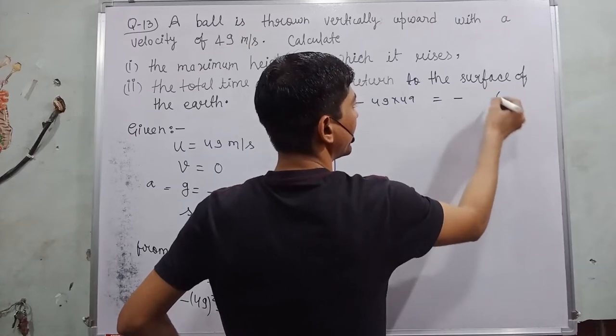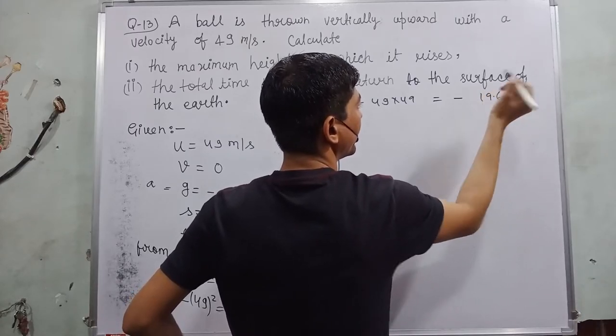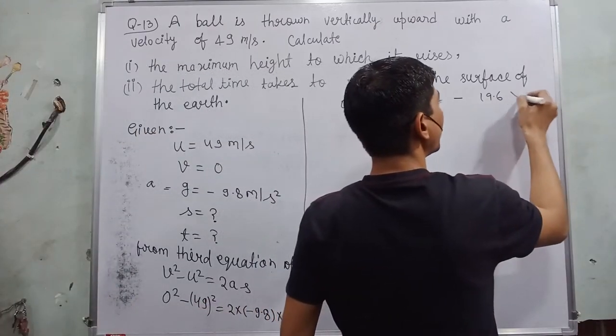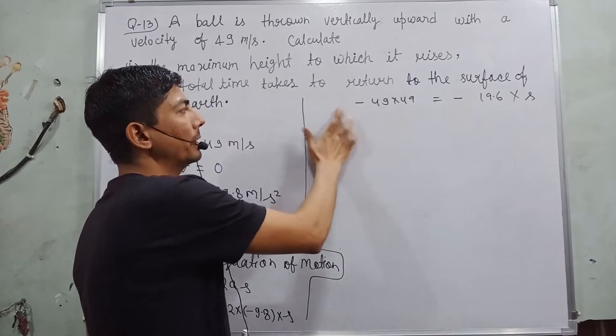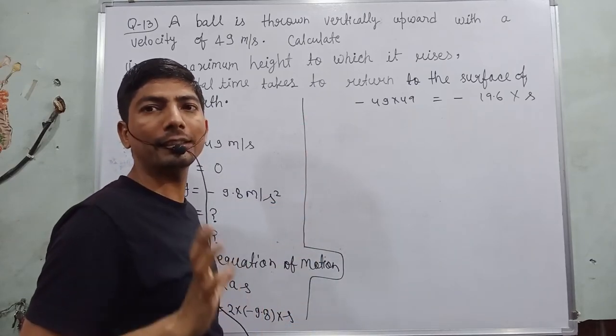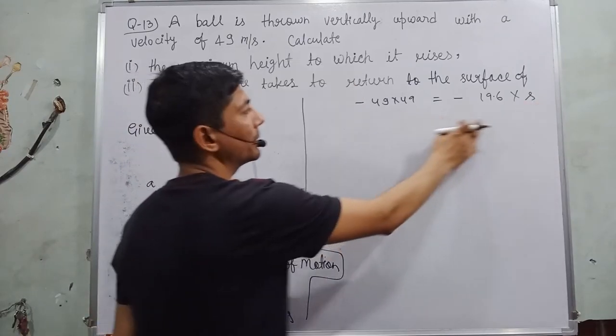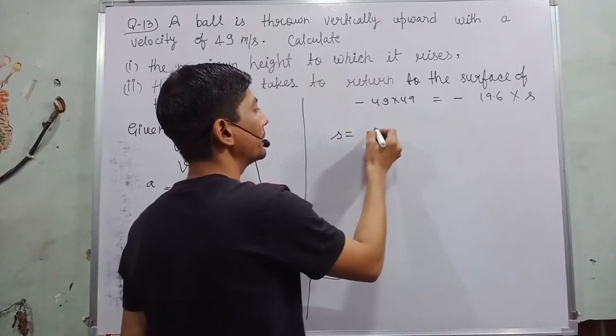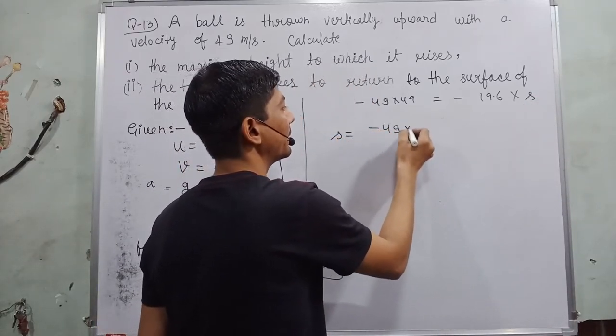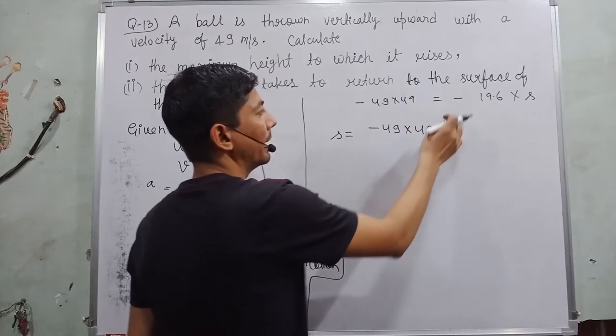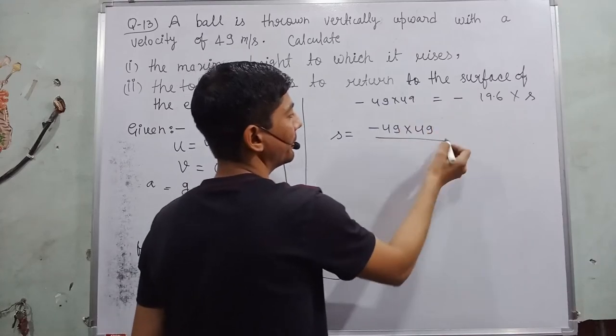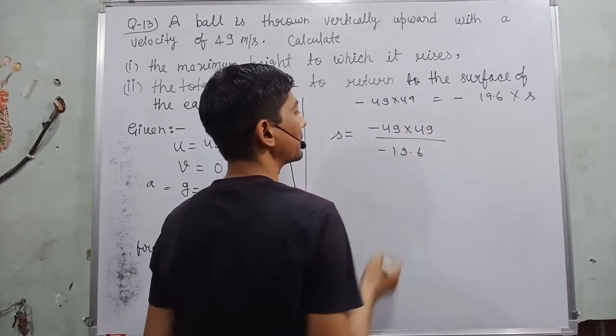19.6, there is negative sign so this will be minus 19.6 into s. So 0 stands for nothing in case of addition or subtraction. So here in order to find out the value of maximum height s, s is equal to minus 49 into 49, and we send this negative 19.6 toward the left hand side, we get minus 19.6.